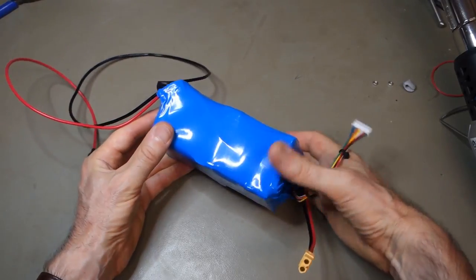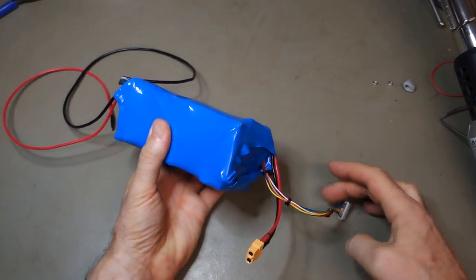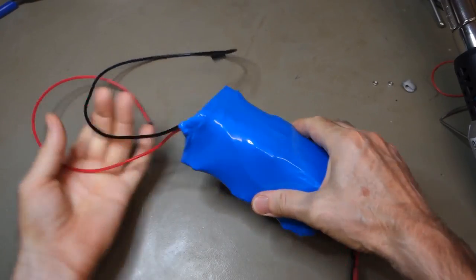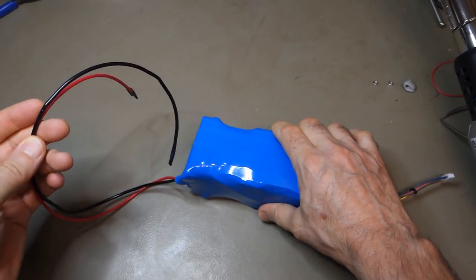So, there we have it nicely wrapped up. Balance and charge leads out of the back, will be the back of the torch, and the power coming out of the front.